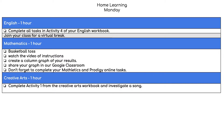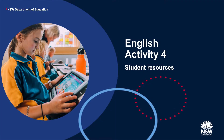So for English you need to complete all of your tasks in Activity 4 in your English workbook. For Maths, you need to play the Basketball Toss video and there's a list of different things you need to do with that. Also do your Mathletics and Prodigy online tasks. And this afternoon you have Creative Arts.